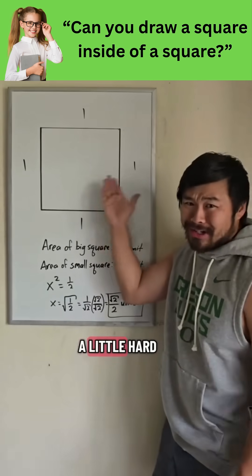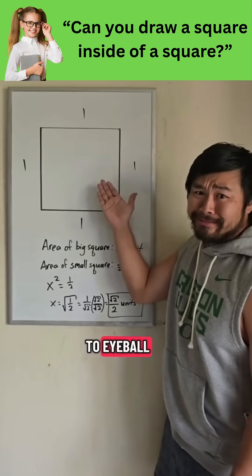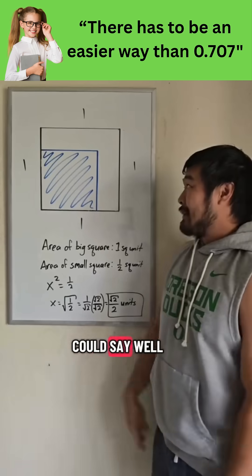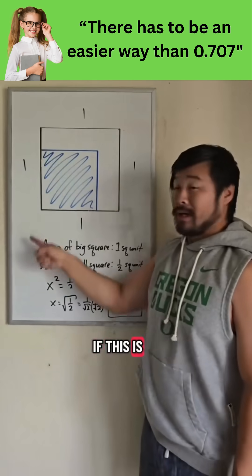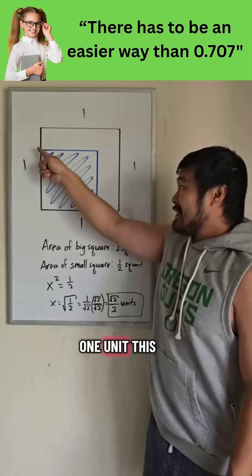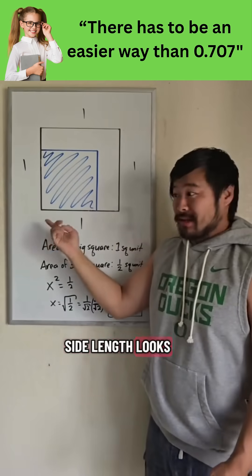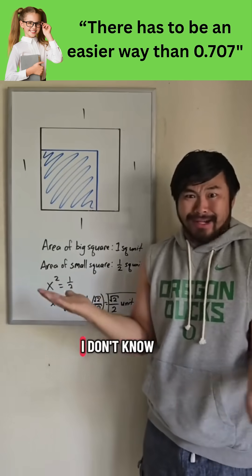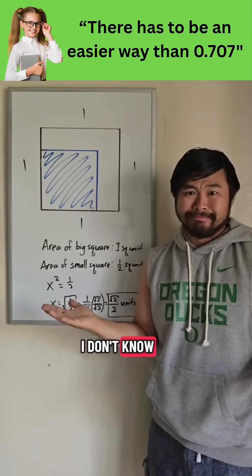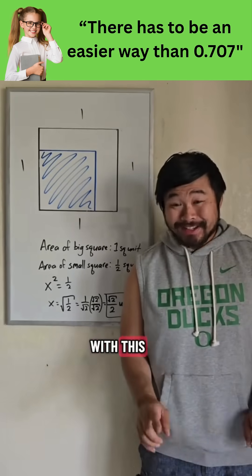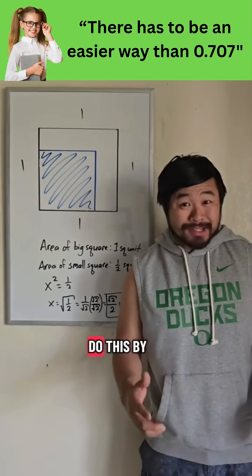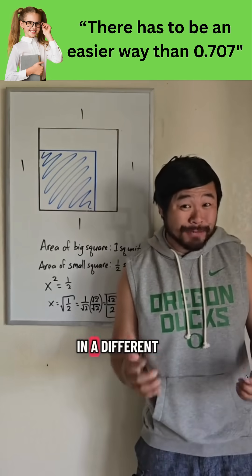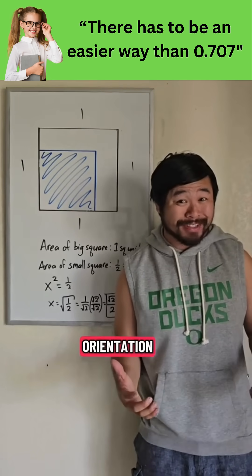That is a little hard to eyeball. For example, I could say, if this is one unit, this side length looks like 0.707 units — I don't know. But we can be more precise with this, and we can do this by thinking about the smaller square in a different orientation.